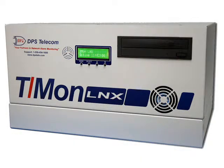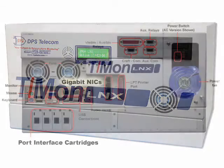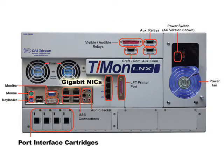T-Mon LNX is the newest hardware platform for T-Mon software. The front panel is clean with an optical drive, an LCD display, and some control buttons. The back panel has a lot of inputs and outputs. For direct input and output, there are mouse, keyboard, and monitor ports. For remote access via LAN and especially for polling LAN devices, T-Mon LNX has six gigabit LAN ports, allowing it to establish independent connections to six different networks simultaneously.